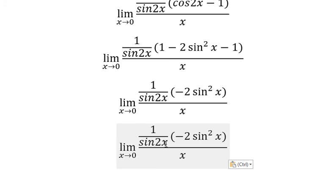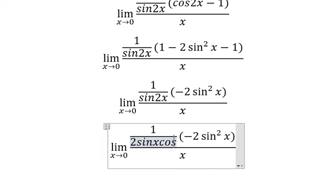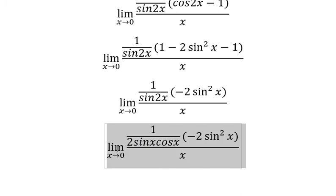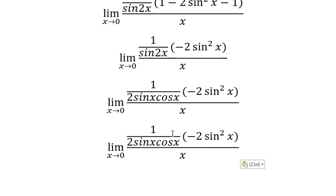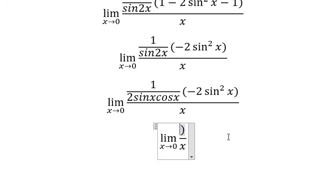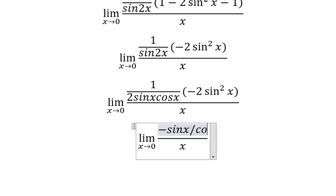Sine 2x we change to 2 sine x cosine x. We simplify 2 sine x and 2 sine x, and you will get negative sine x over cosine x.